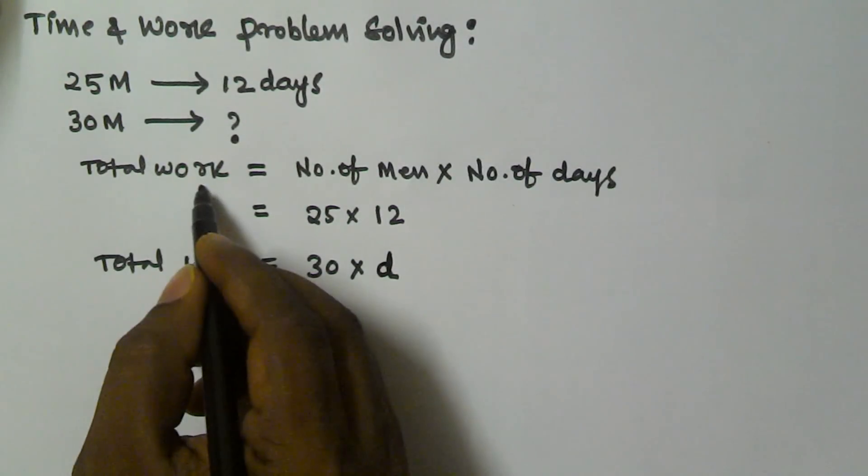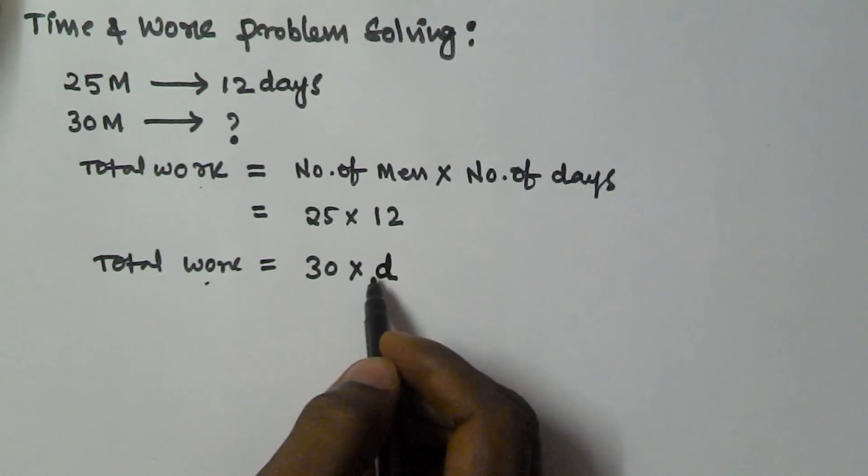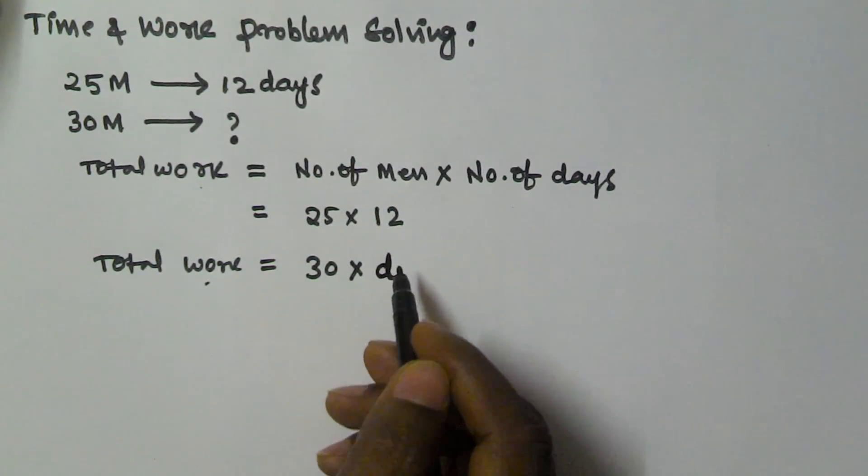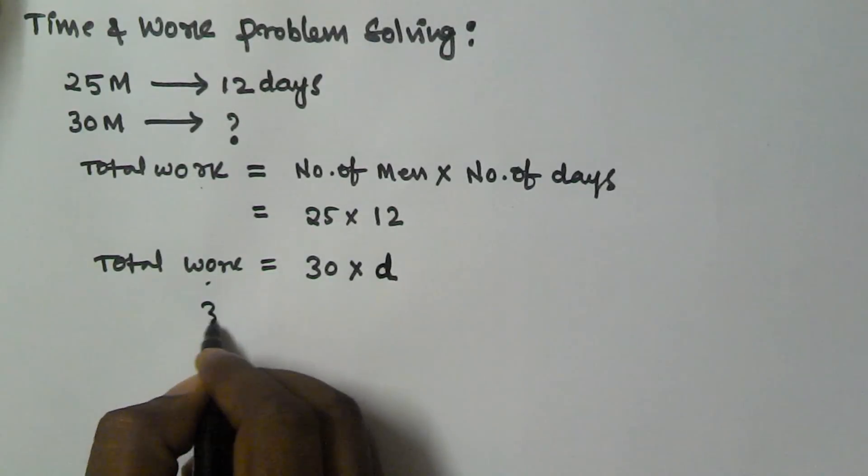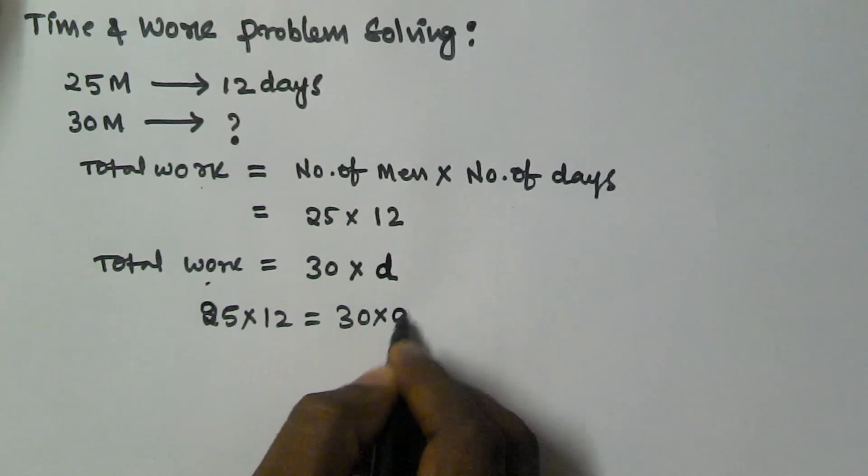The total work here is 25 times 12, and the total work is also 30 times D. Since both are working on the same work, 25 times 12 equals 30 times D.